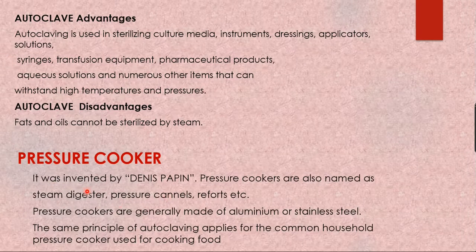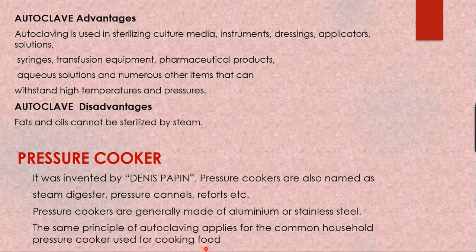Another example of moist heat sterilization is the pressure cooker, first invented by Denis Papin. Pressure cookers are also called steam digesters, pressure canals, or retorts. They are generally made of aluminum or stainless steel and work on the same principle as the autoclave — steam under pressure. At home they are used for cooking food, and in the food industry they are widely used for major sterilization processes. Food is cooked above the boiling point of water, killing bacteria and viruses.